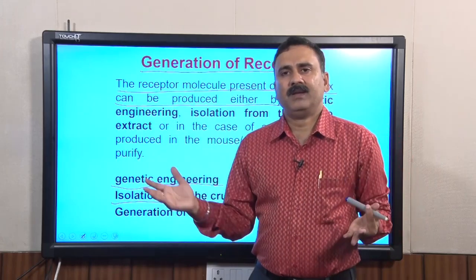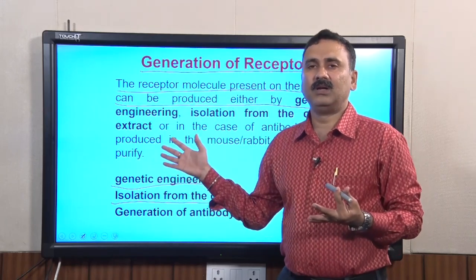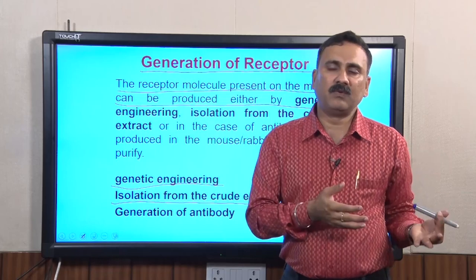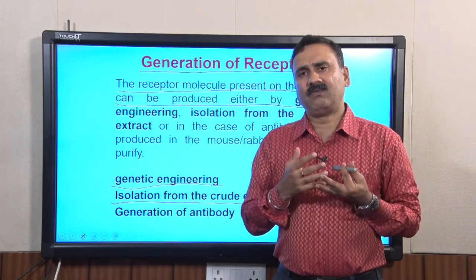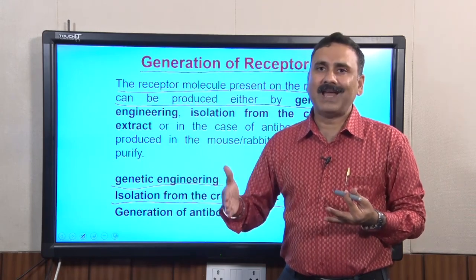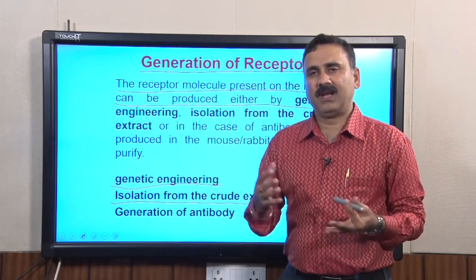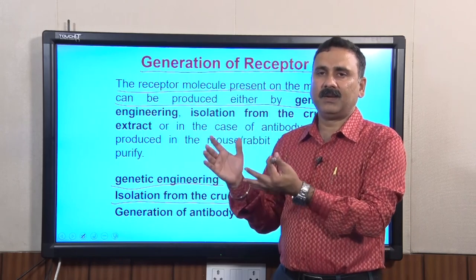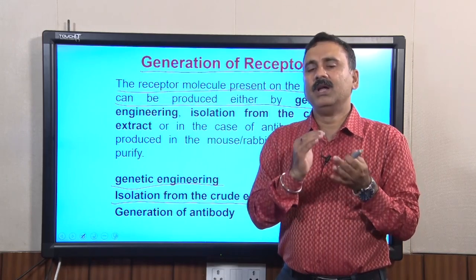The second method is more relevant in cases where you do not know about the receptor. In those cases, you use some assay system to evaluate the presence or absence of that particular receptor in the crude mixture. When you pass the crude mixture through ion exchange, hydrophobic interaction, or gel filtration chromatography, you get different fractions and test all these fractions using an assay-based screening to finally get the receptor in its purest form.